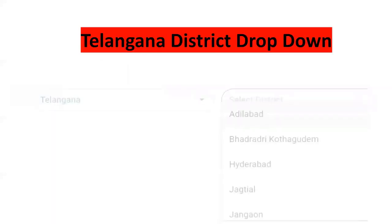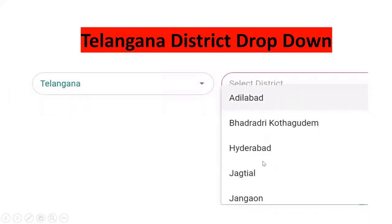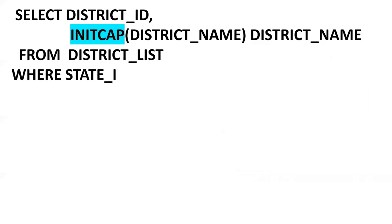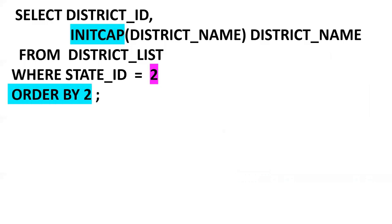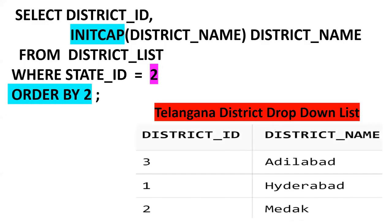Now let's see the Telangana example. If I select Telangana, Telangana's districts need to be populated. Telangana's state_id is 2. The query is: SELECT district_id, INITCAP(district_name) AS district_name FROM district_list WHERE state_id = 2 ORDER BY 2. Here 2 is the Telangana state code. We get the Telangana districts in ascending order.